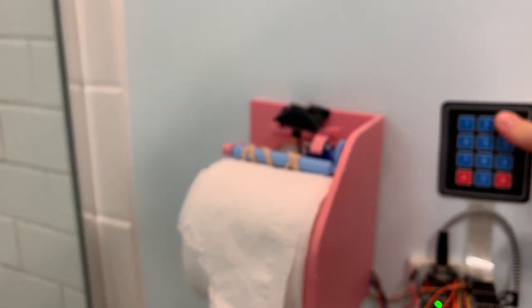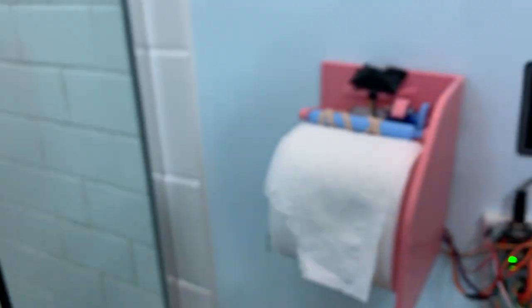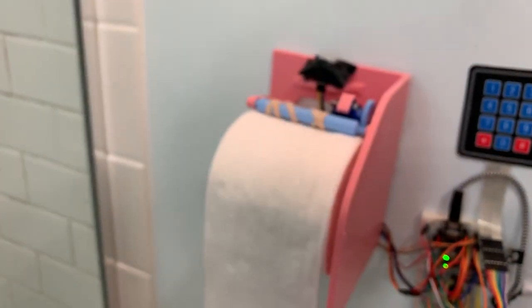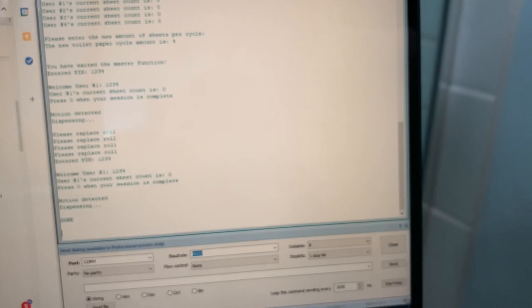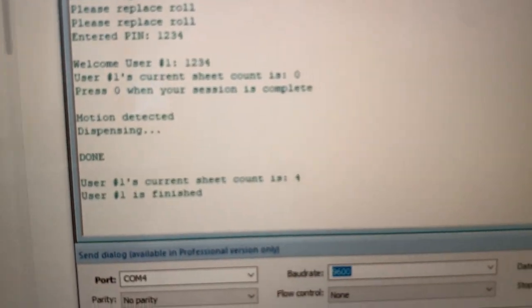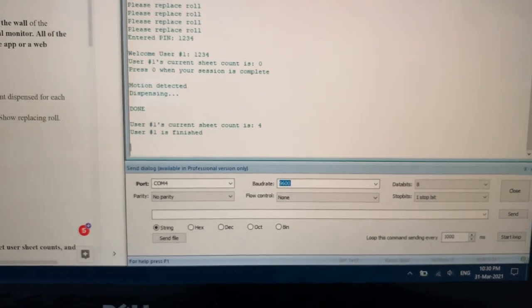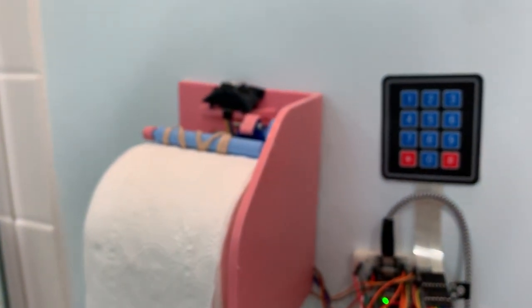So let's do 1234 again. We're in the user, if I wave my hand, four more sheets are dispensed as you can see. Once we quit by clicking zero, it says four.